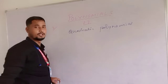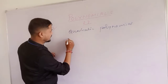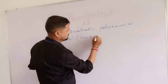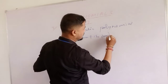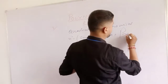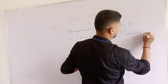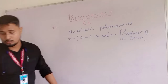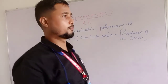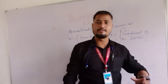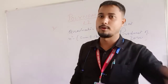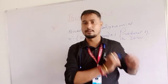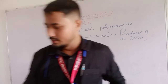To find a quadratic polynomial, remember the formula: x squared minus sum of the zeros, into x, plus product of the zeros. Using this formula, we can solve the given questions. Now let's look at question number two.